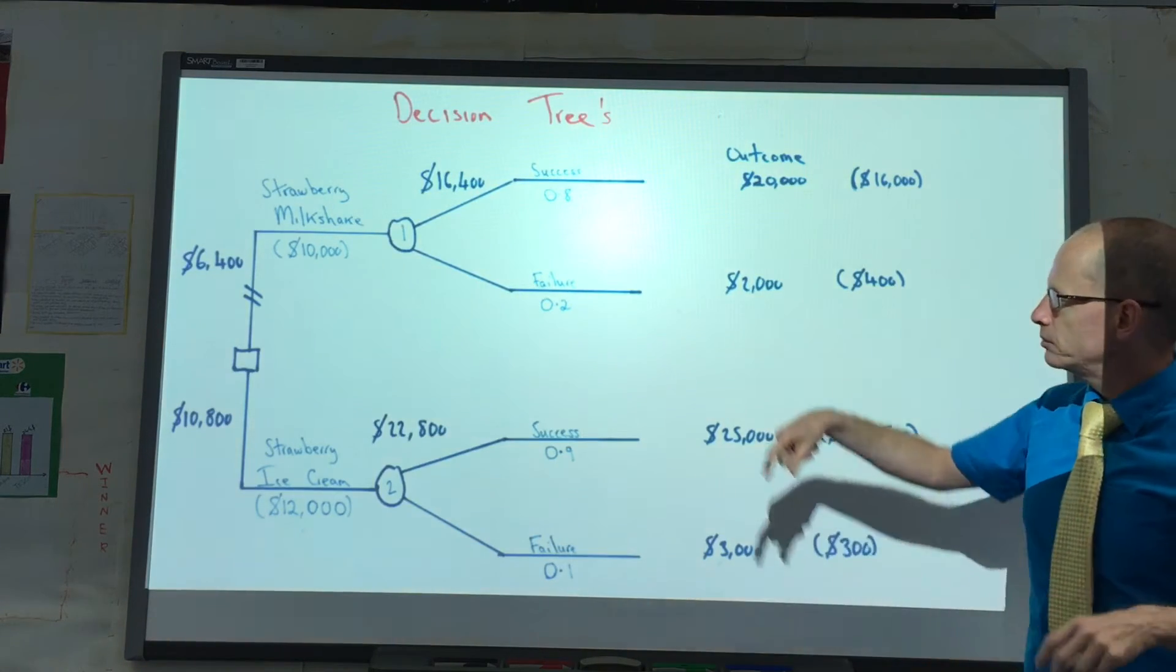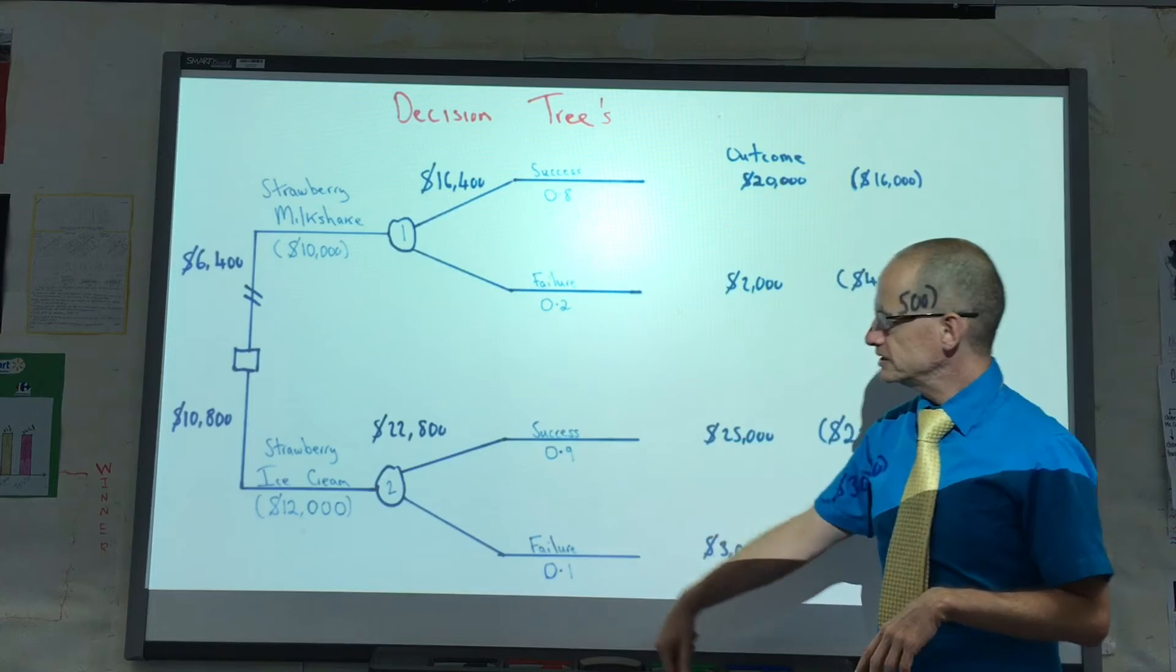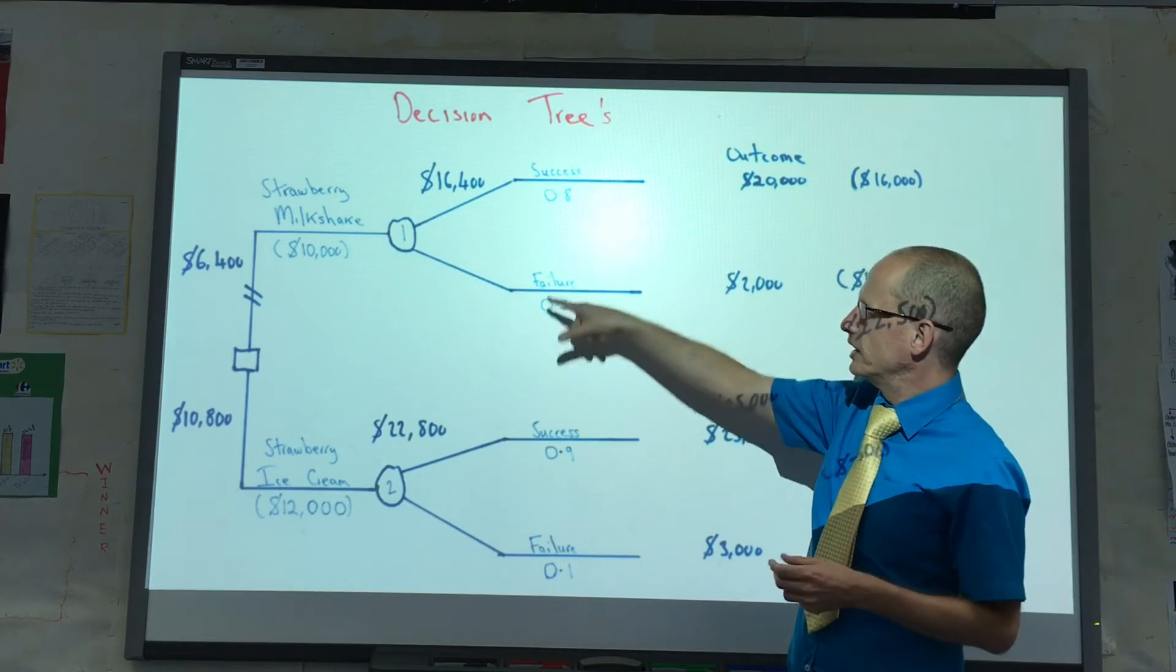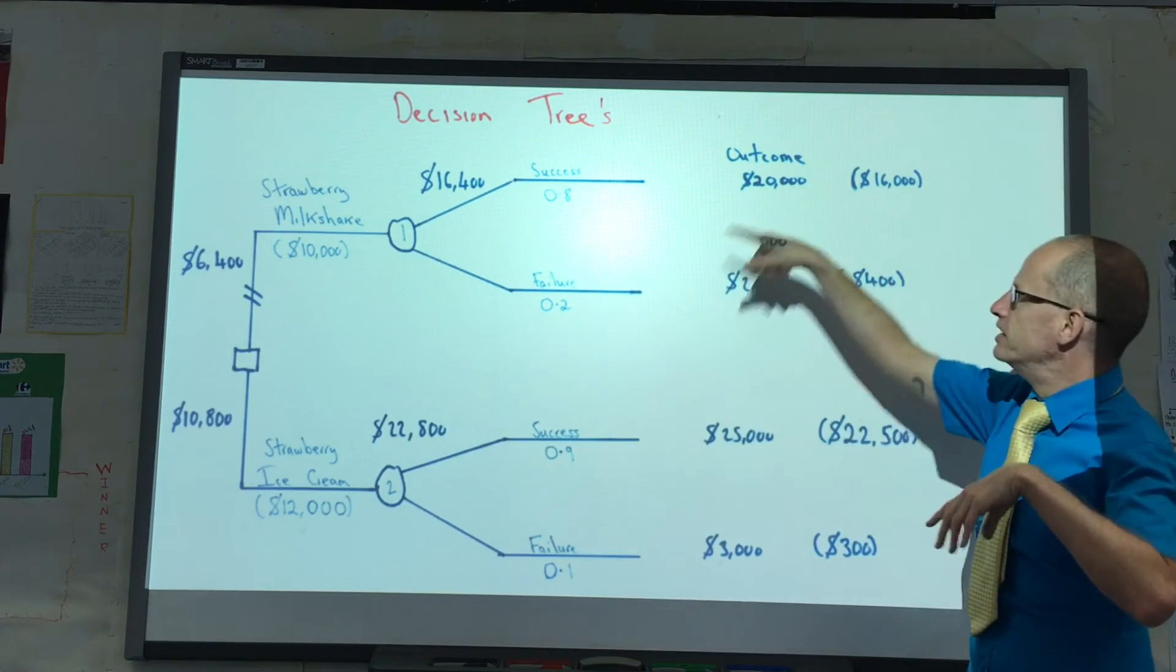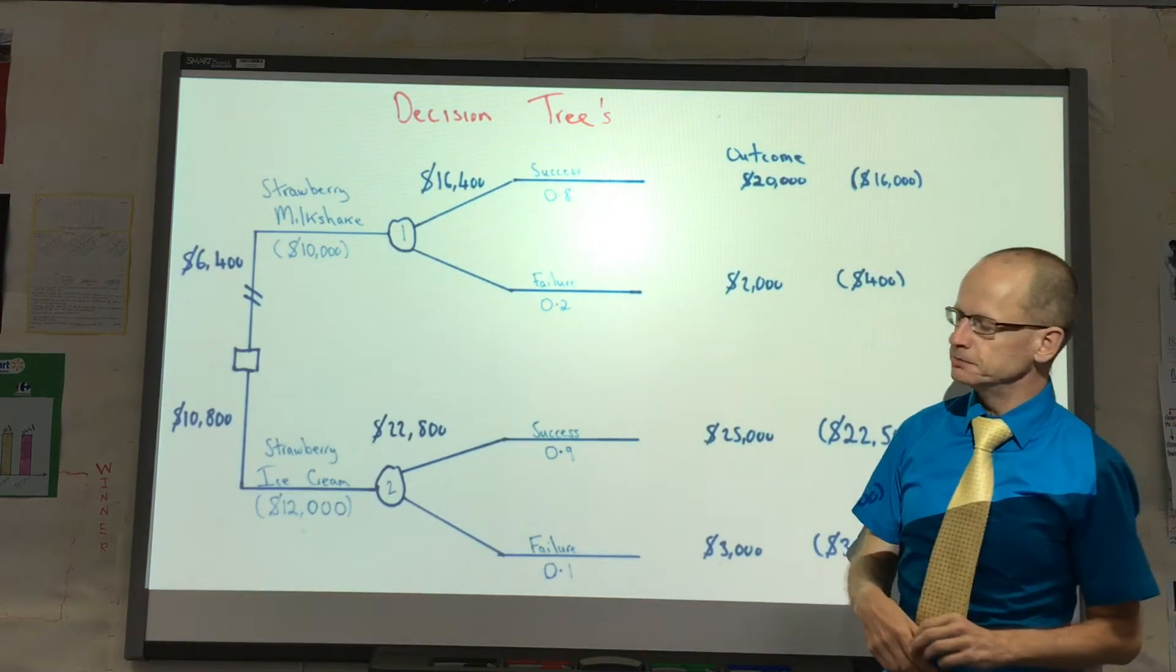Because we could, for example, change this down to 0.7, increase this to 0.3, and that could be 0.9 or 0.1. These numbers could change, for example this could increase, or this could decrease, and you would give a slightly different decision.